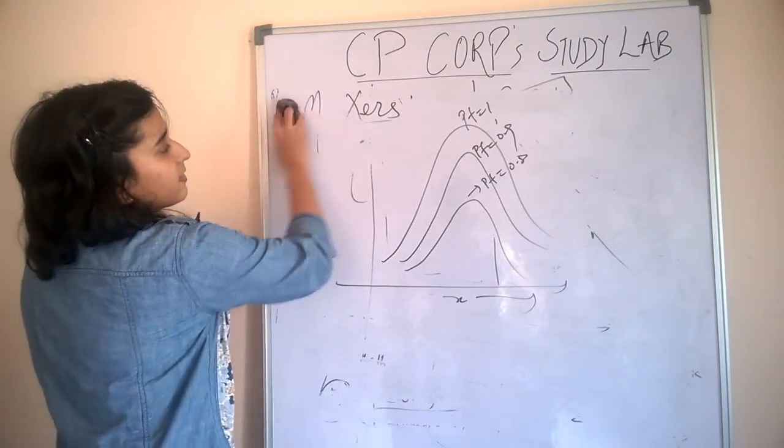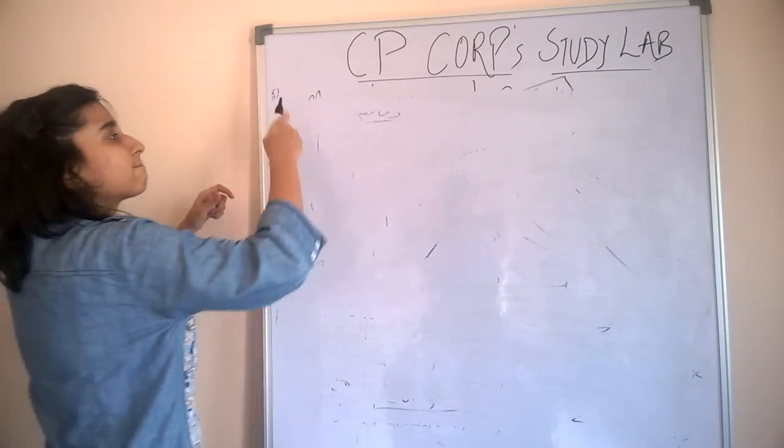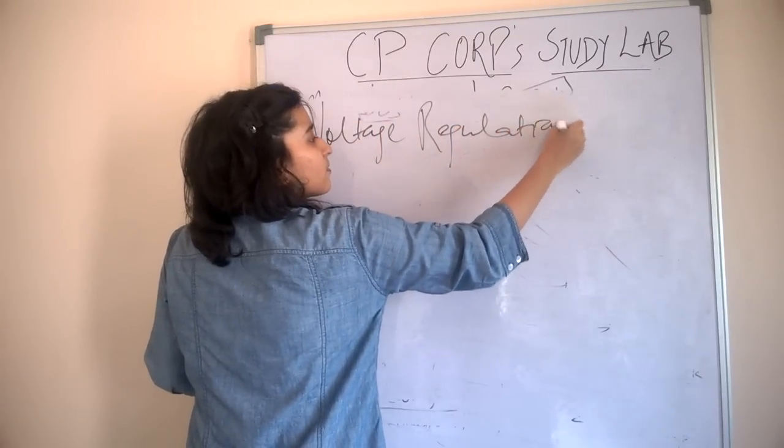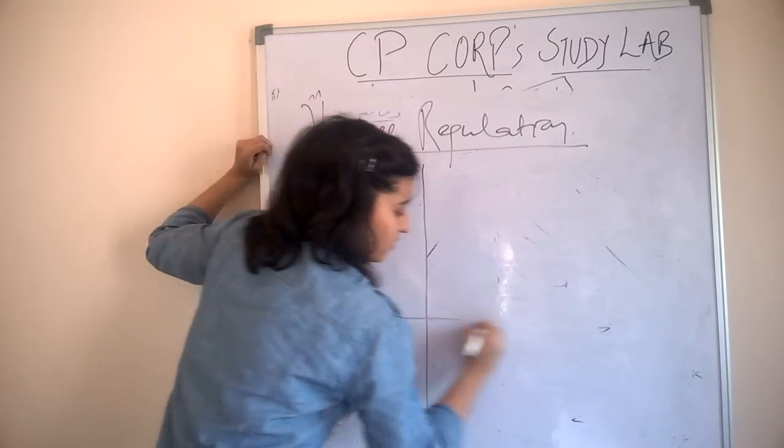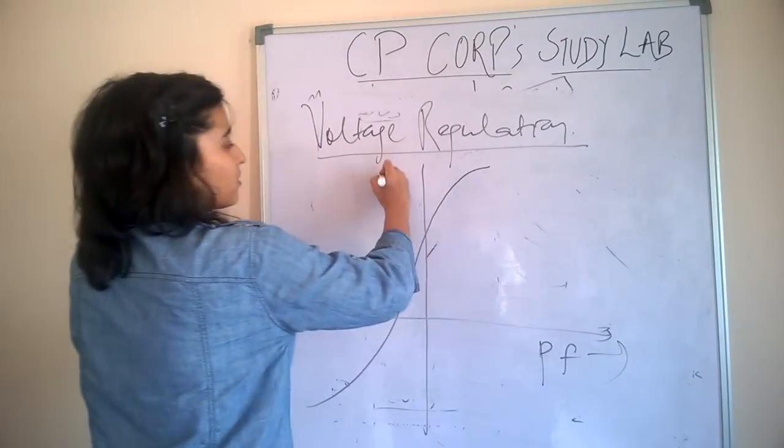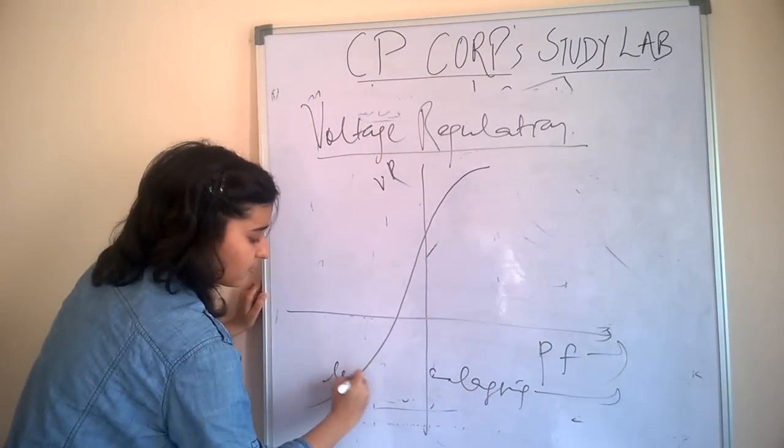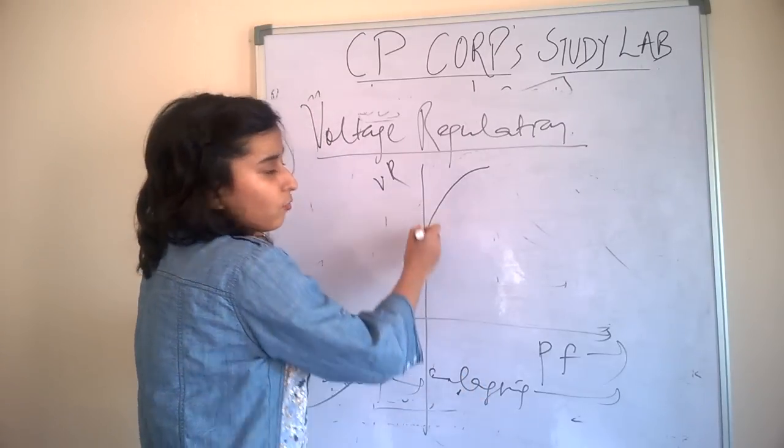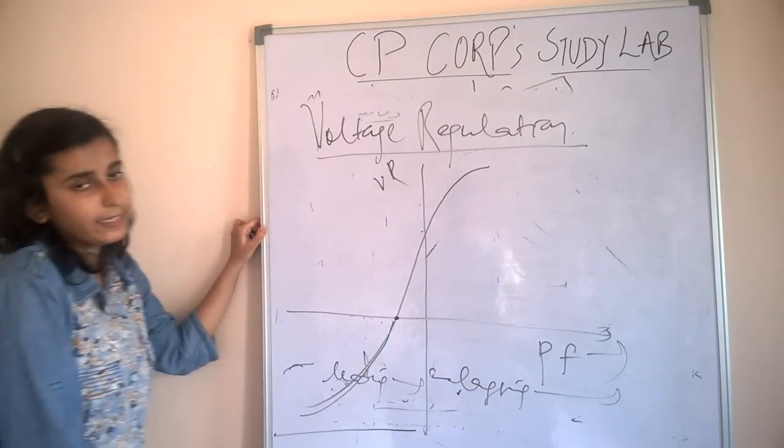Now second important thing is voltage regulation. The curve of voltage regulation: this is power factor and this is voltage regulation. This is lagging and this is leading. At lagging power factor, voltage regulation is always positive. Zero voltage regulation and negative voltage regulation always occurs at leading power factor.